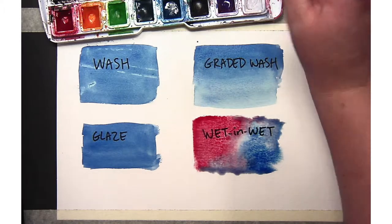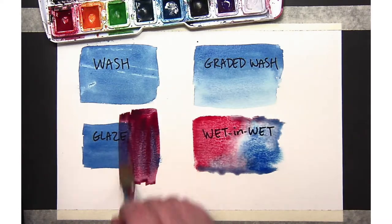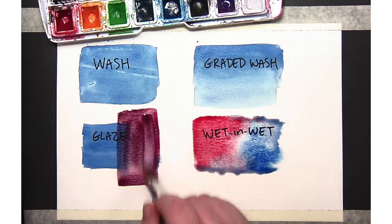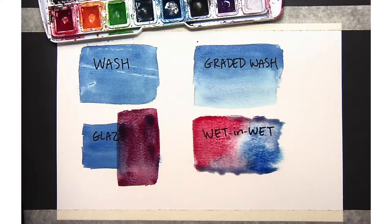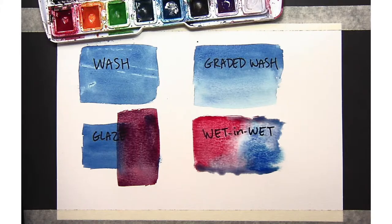So for the glaze, I'm going to go back over my original wash with another color. And the more brush strokes you use, the more it may pick up the color underneath. So here I get kind of a purpley color, but if you don't want that to mix, just use fewer brush strokes and a little bit less water.